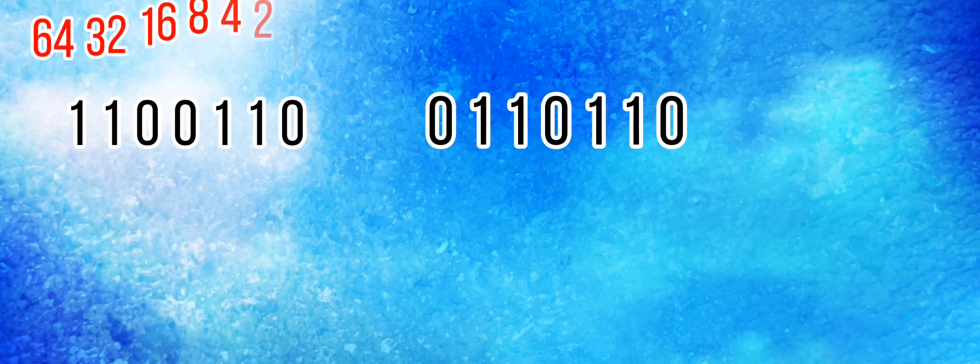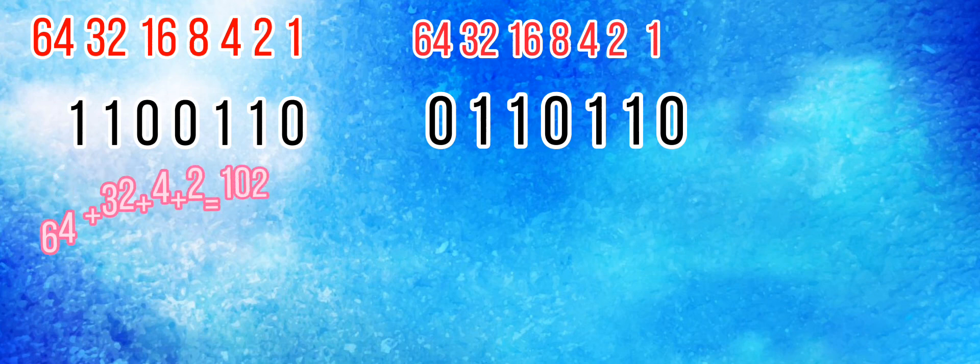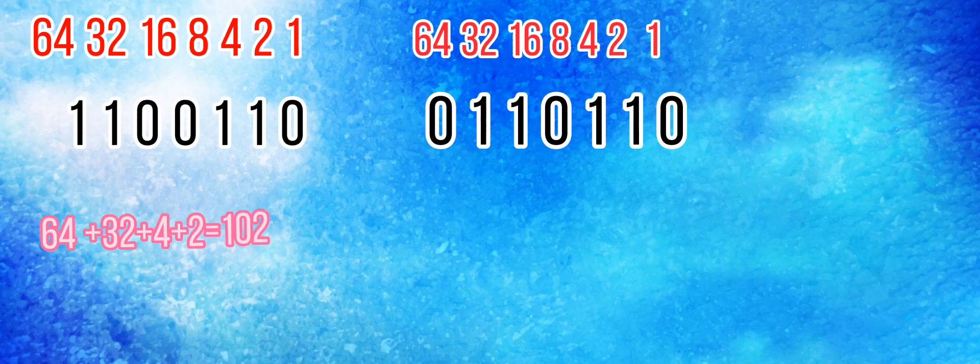If you can type in binary, you can type 1100110. It's 7 digits, as it is a 7-bit system. Then another one: 0110110. Using 64, 32, 16, 8, 4, 2, 1, since we have 64 and 32, we add those. We also have 4 and 2.